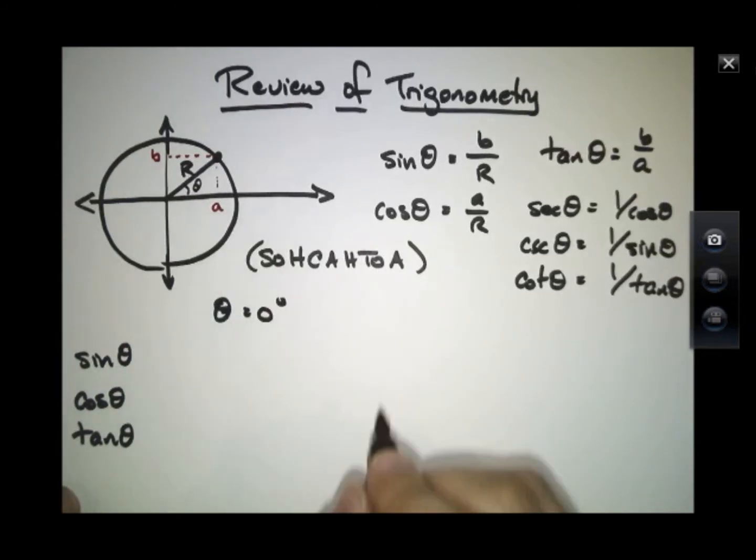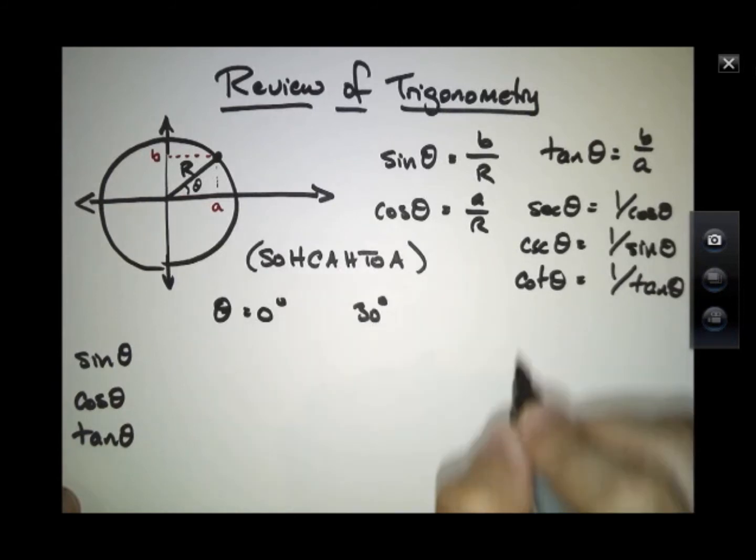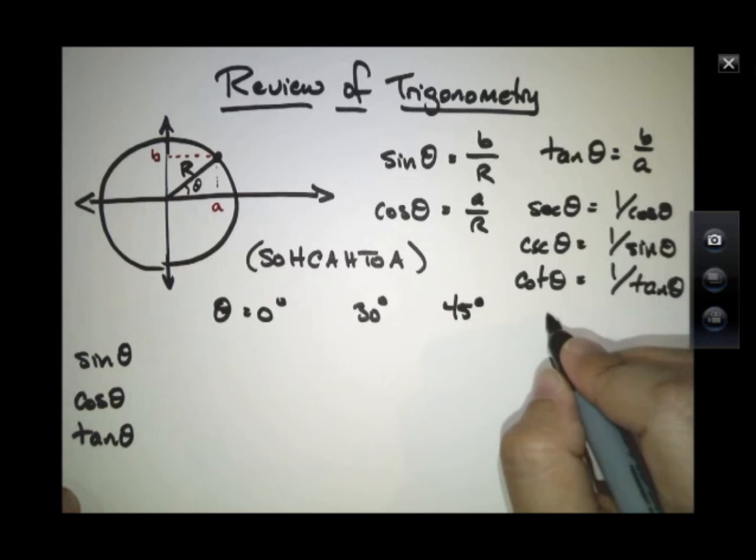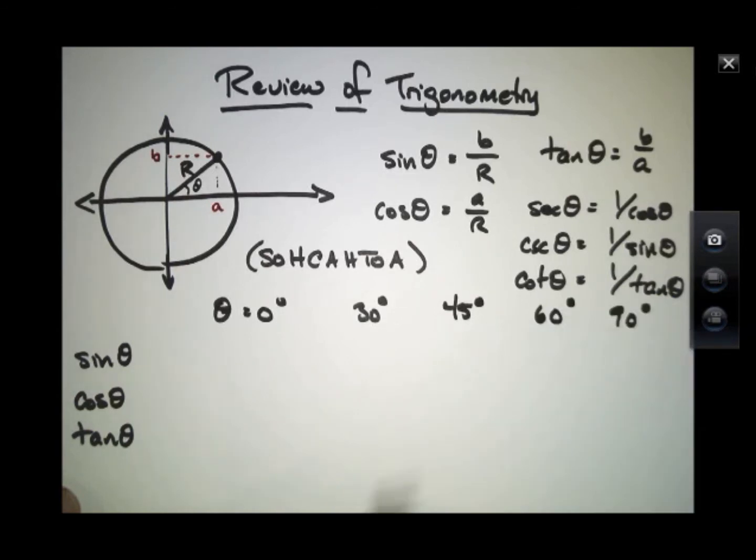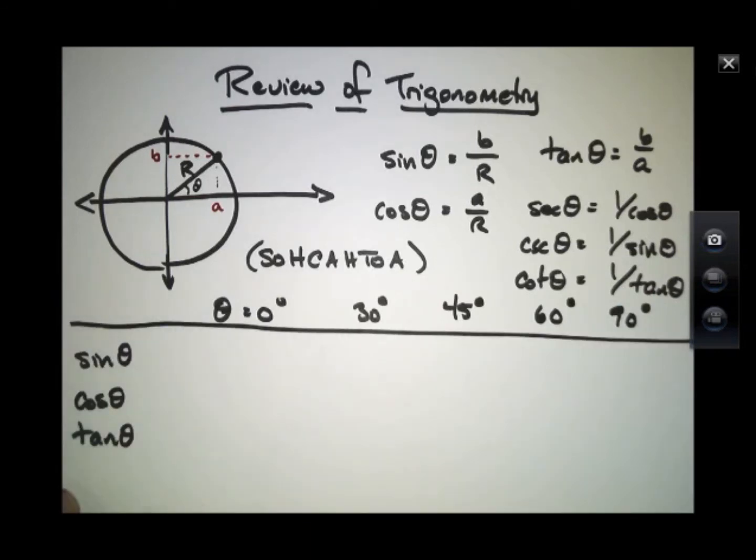So for example, theta at 0 degrees, or 30 degrees, or 45 degrees, or 60 degrees, or 90 degrees. These are some angles for which it's useful for you to know the values of the standard trig functions.